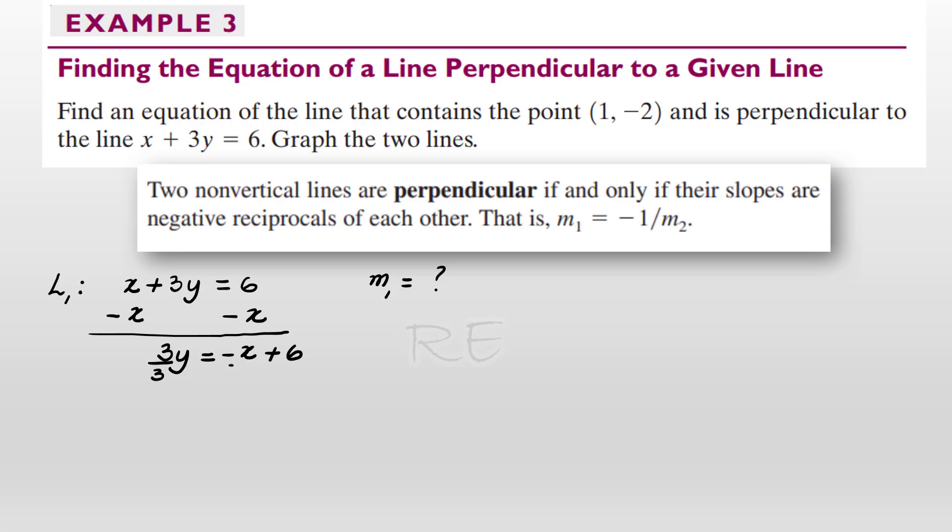We divide all three terms by 3 and Y is equal to negative one third of X plus 2. Therefore, M1 is equal to negative one third.